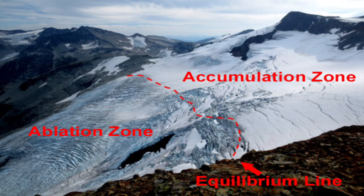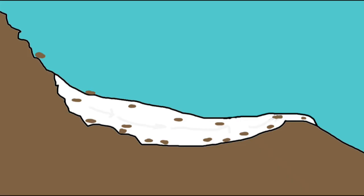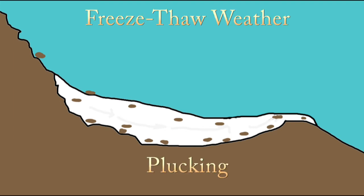Below the equilibrium line is the ablation zone. Glaciers shape and push through the mountains by breaking off rocks. This is done by freeze-thaw weathering and plucking, which is the tearing out of rocks from the underside of the glacier.